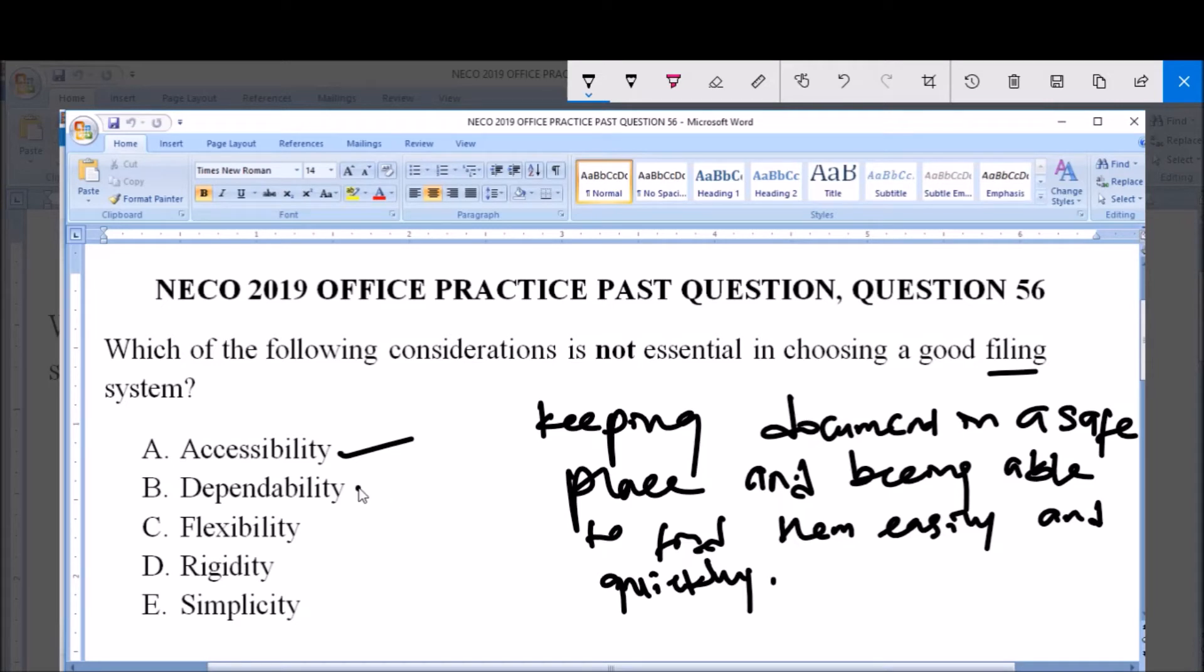B. Dependability. Dependability is also a consideration. You must ensure that this filing system is reliable.